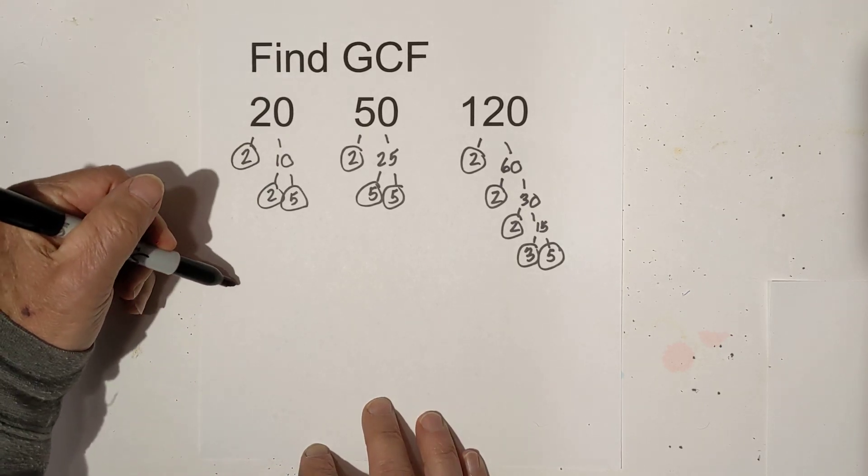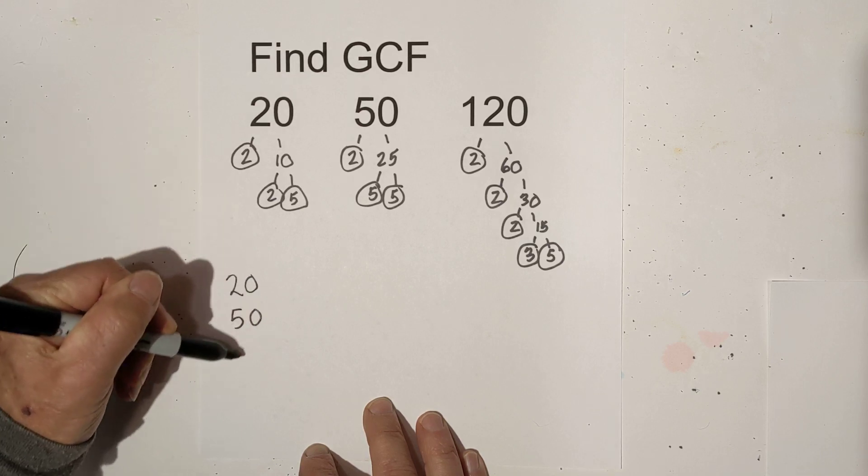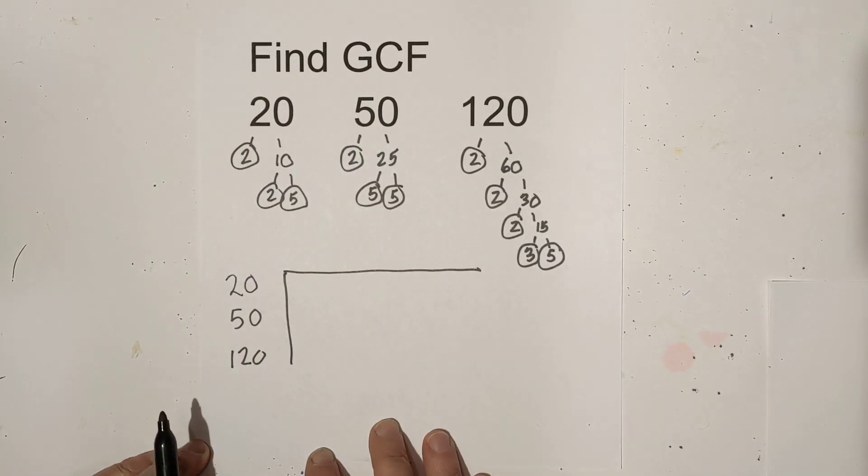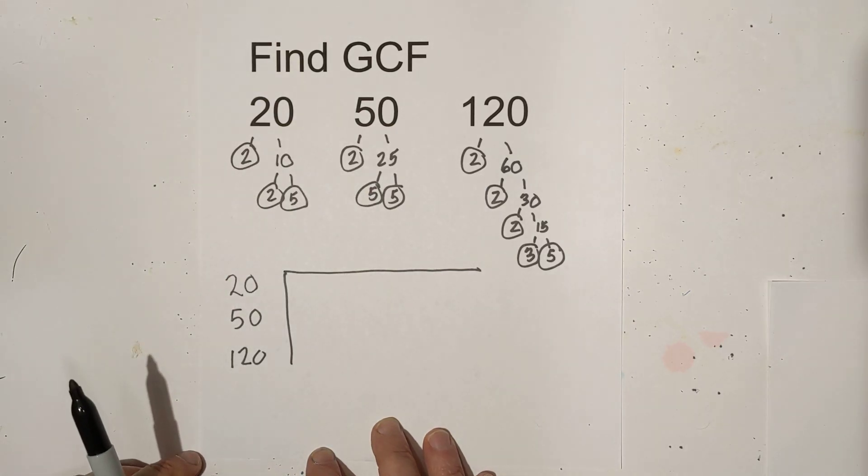This next step took me a while to figure out. I think I saw a YouTube video. And that is to create a chart. What this chart does is it organizes all these prime numbers, and it just makes life easy.